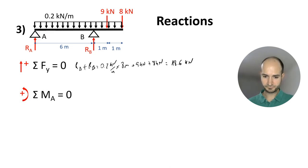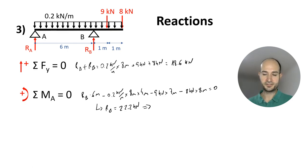Taking moments on A, we have that RB times 6 meters minus 0.2 kN per meter times 8 meters times 4 meters and minus 9 kN times 8 meters minus 8 kN times 8 meters equals 0. If we move values to one side to leave RB alone, we get that RB equals 22.2 kN. Therefore, RA is 18.6 minus 22.2 kN, so minus 3.6 kN.